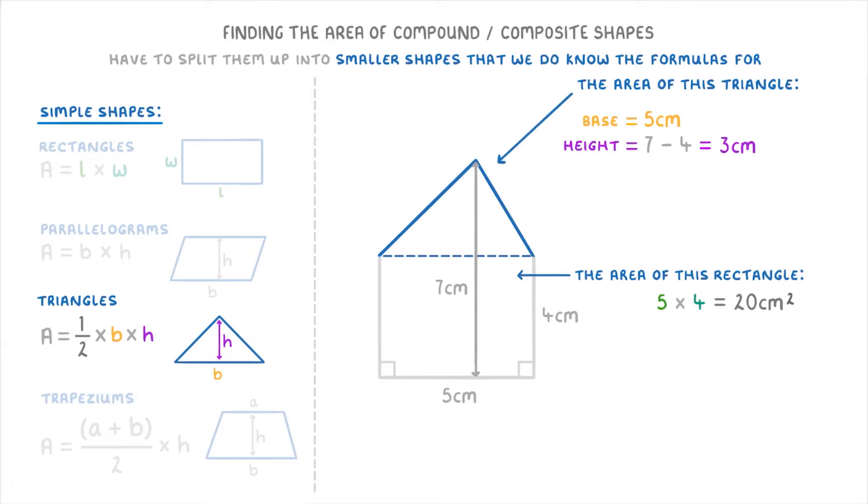And now that we have our dimensions, we can find the area by just doing one half times the base of five times the height of three and we get seven point five square centimeters.